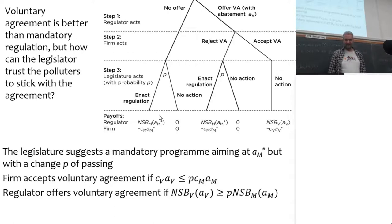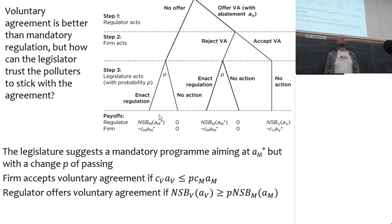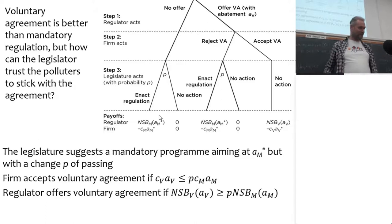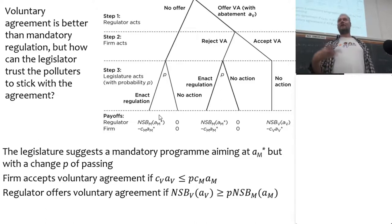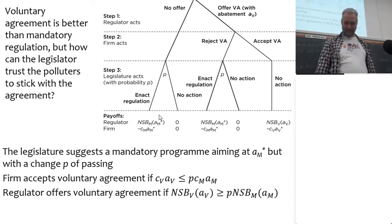This particular example just tells you: if it's beneficial for the firm to go for a voluntary agreement, and it's beneficial for the regulator, and both parties need to agree, then that is what would happen. It's important that you can tell the difference between math that generates insight and math that merely intimidates.